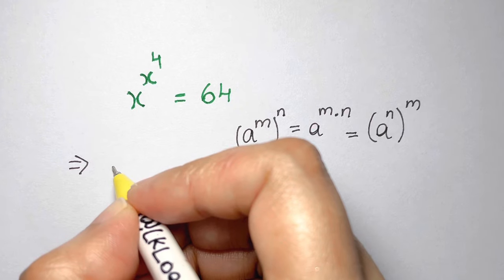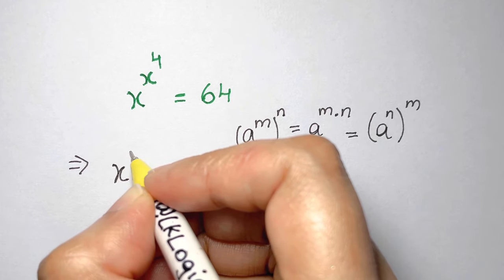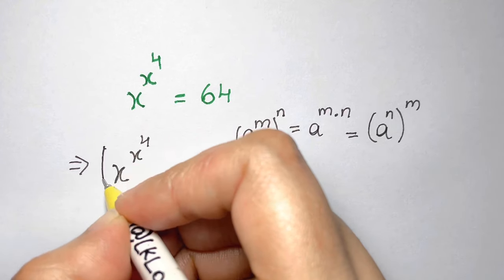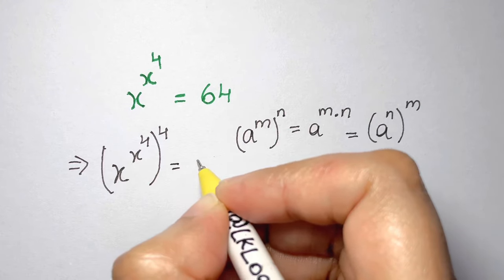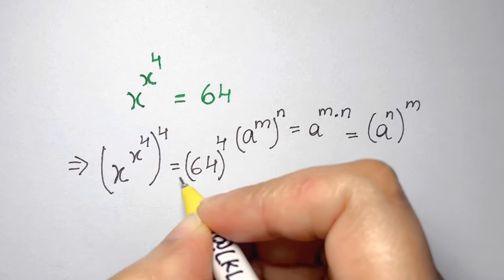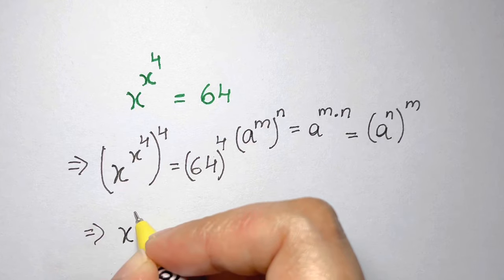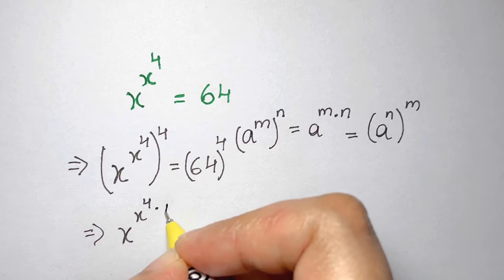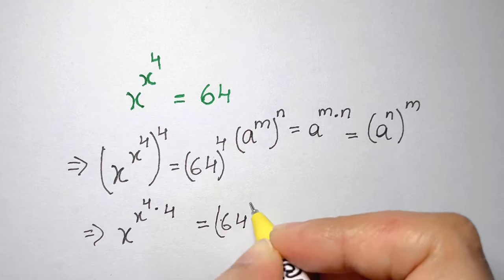The first step is to take the power of 4 on both sides — we already have 4, but I'm going to apply it again. So that's x to the power of x to the power of 4, whole to the power of 4, and on the other side, 64 to the power of 4. Whenever you have power to power, you multiply the powers, giving x to the power of x times 4, which equals 64 to the power of 4.